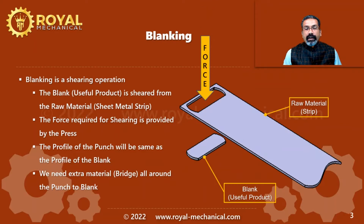Before we get started, let's refresh our learnings on the blanking operation. Blanking is a shearing operation. The blank, which is the useful product, is sheared from the raw material — a sheet metal strip. The force required for shearing is provided by the press machine. The profile of the punch and the die opening will both be the same as the profile of the blank. We need certain extra raw material all around the punch for the blanking operation to happen. This extra raw material is called the bridge.